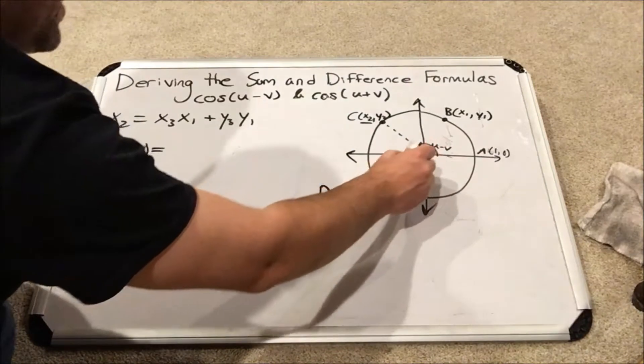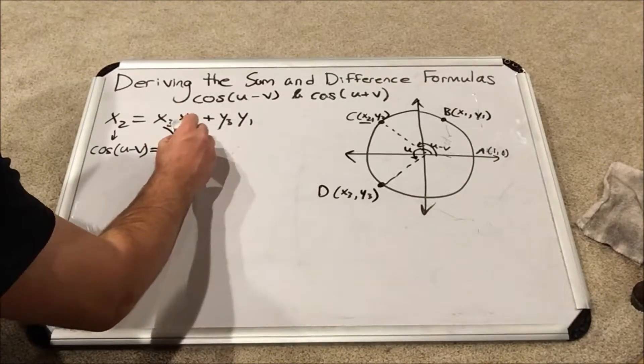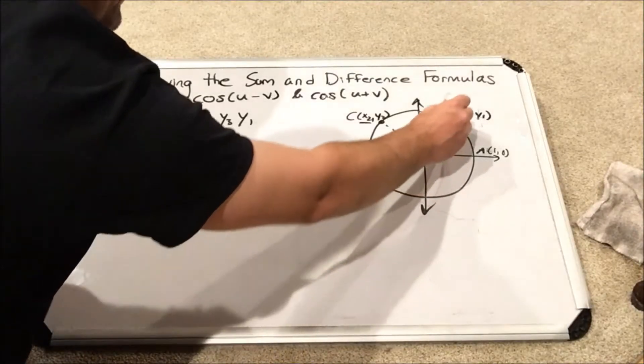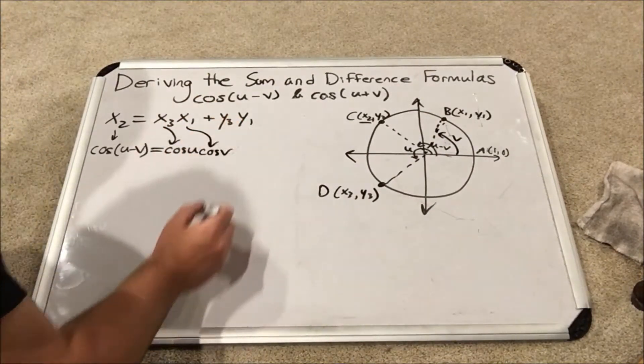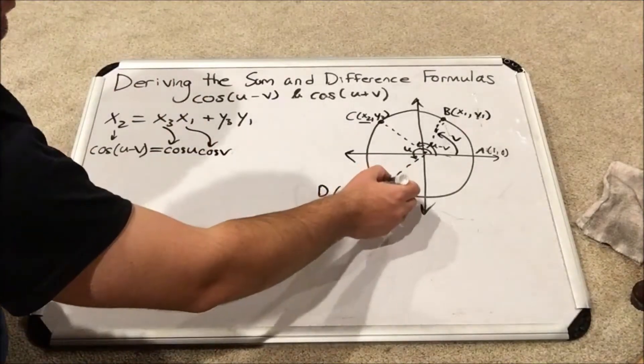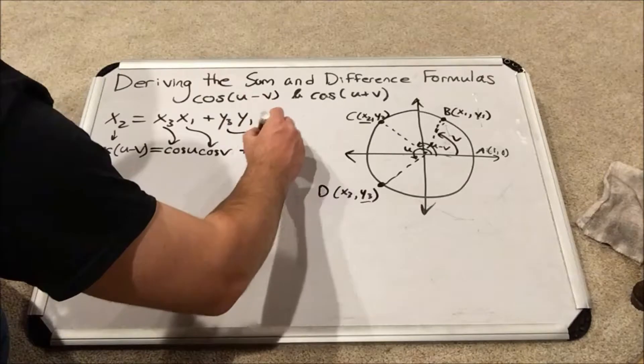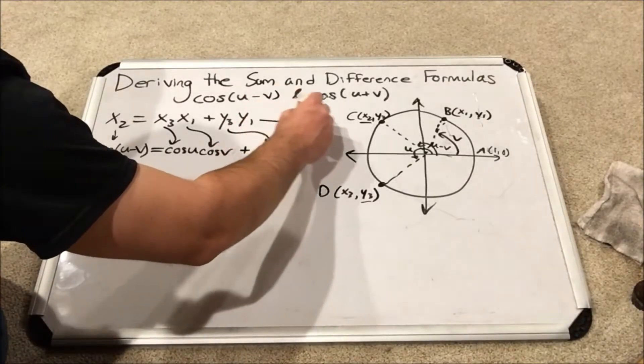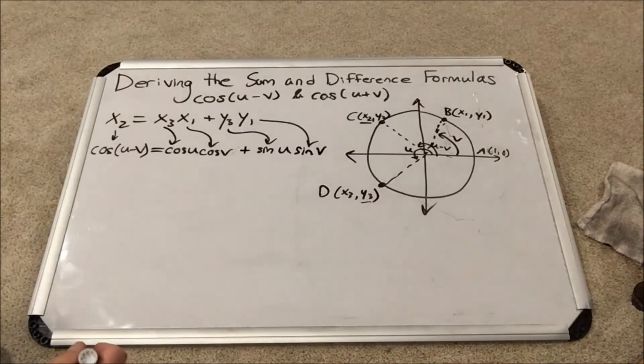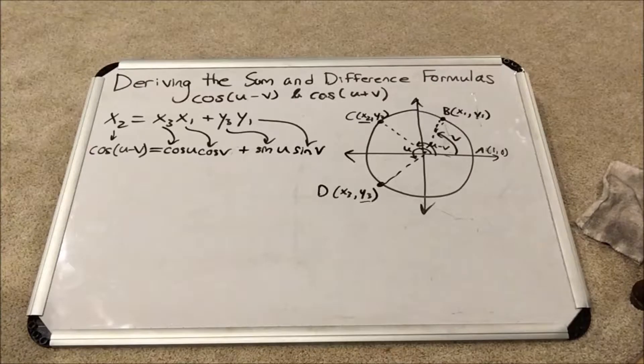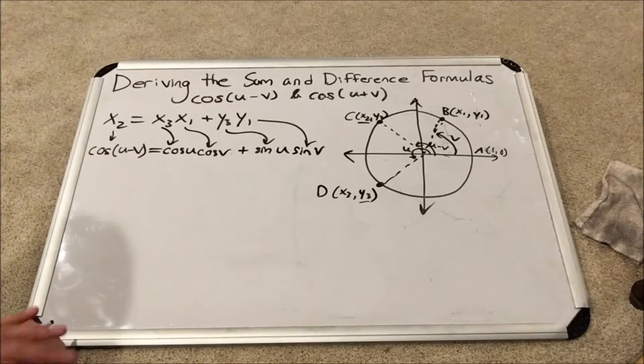x3, that was angle u to that point D. So x3 will be the cosine of u. x1 maps to point B, which was angle v. So x1 is the cosine of v. Now let's talk about y3. y3 is the y value for point D. That means it is the sine of angle u. So y3 is the sine of angle u. And y1, by the same method, will be the sine of angle v. We have just gotten to the cosine u minus v formula. Excellent work. If you followed along, congratulations. Feel free to rewind certain parts of the video if you're having trouble at certain steps. The laborious part is finished.